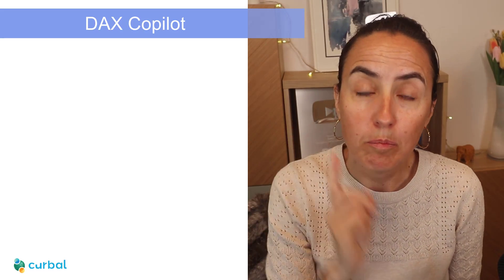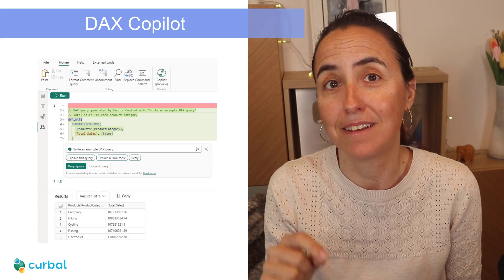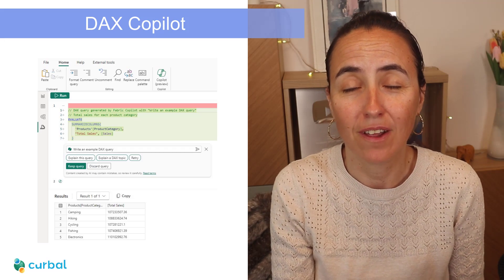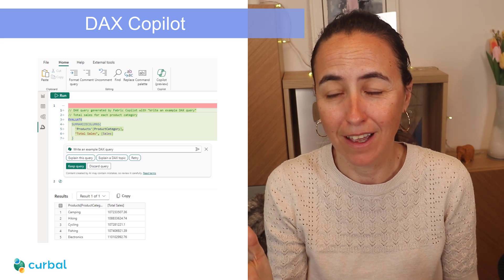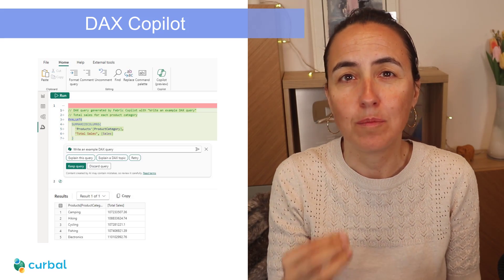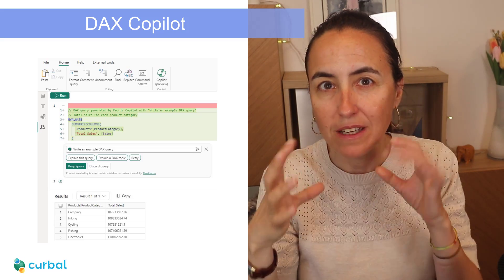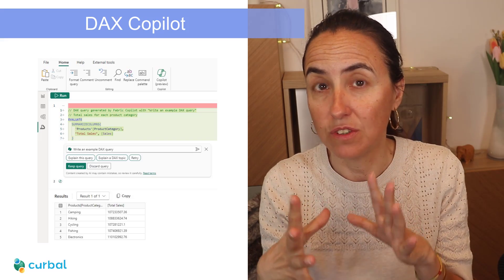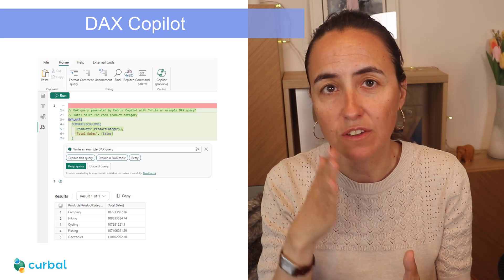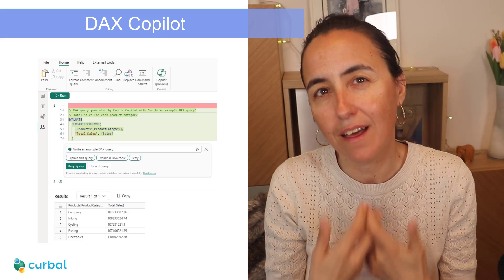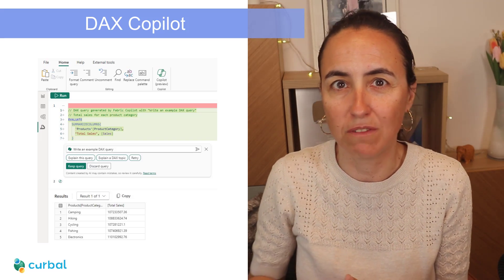They have launched Copilot for DAX, and that is actually much much better. If you have a Fabric capacity, go and check it out — but be very careful, because when you ask for things it might look convincing, but the way it creates the DAX is not exactly what you need. Regardless, if you check your measures carefully, it will help you write DAX and give you at least an idea of how to tackle the problem.